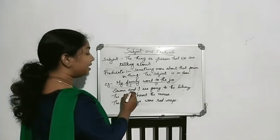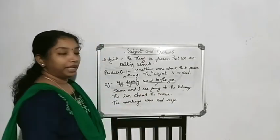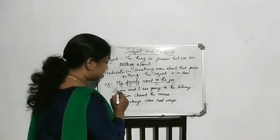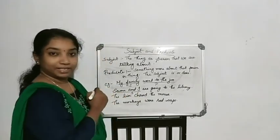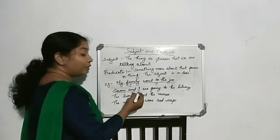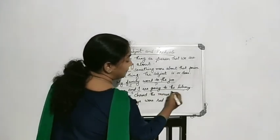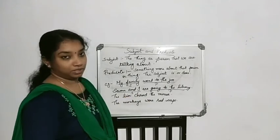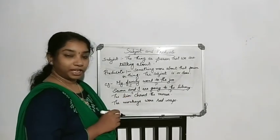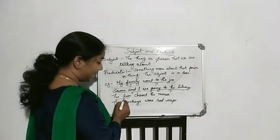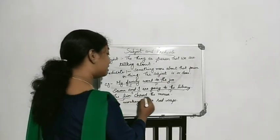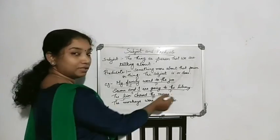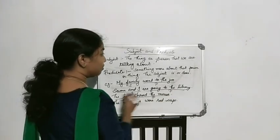Next sentence: 'Savan and I are going to the library.' Subject is Savan and I. And 'are going to the library' is the predicate. Next: 'The lion chased the mouse.' Subject is lion. Chased the mouse is the predicate — here chased is the verb and the mouse is the object.